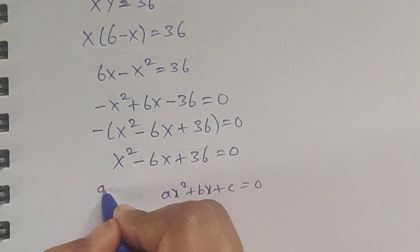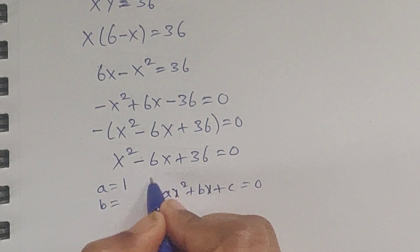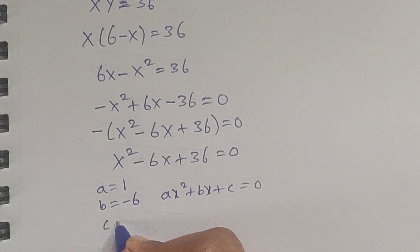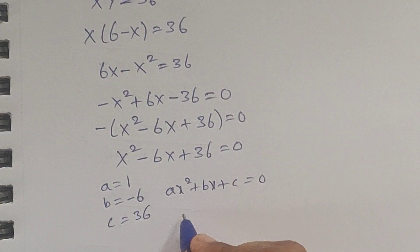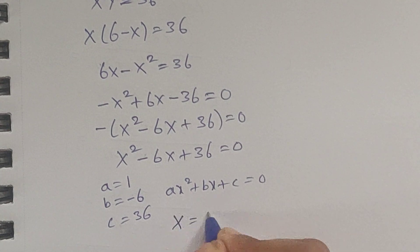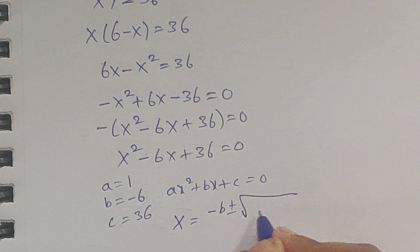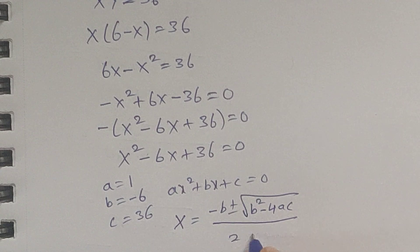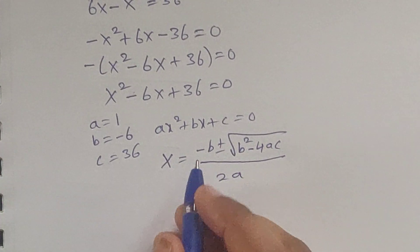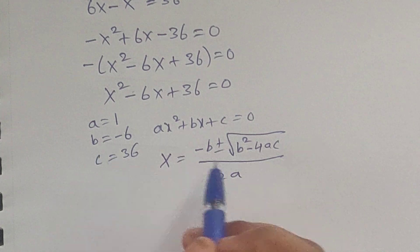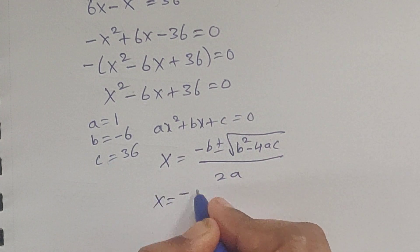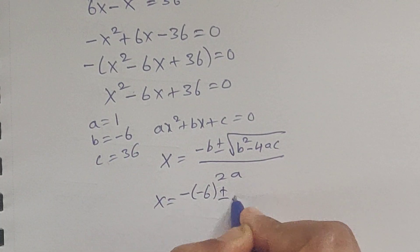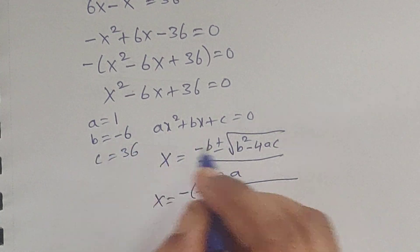Write the values of a, b, c: a equals 1, b equals negative 6, and c equals 36. Here we can use the quadratic formula: x equals minus b plus or minus square root of b squared minus 4ac, divided by 2a. Now substitute the values of a, b, c.